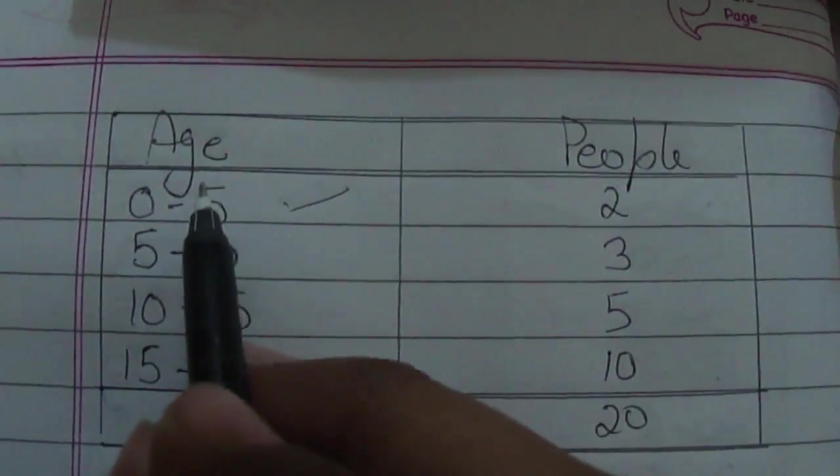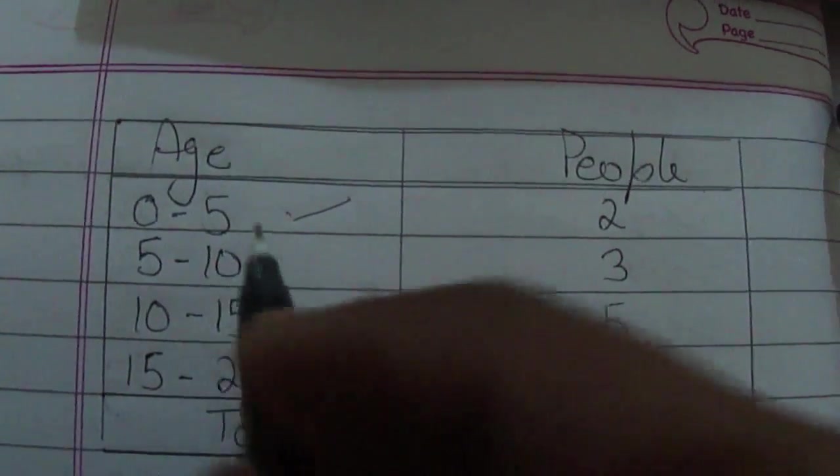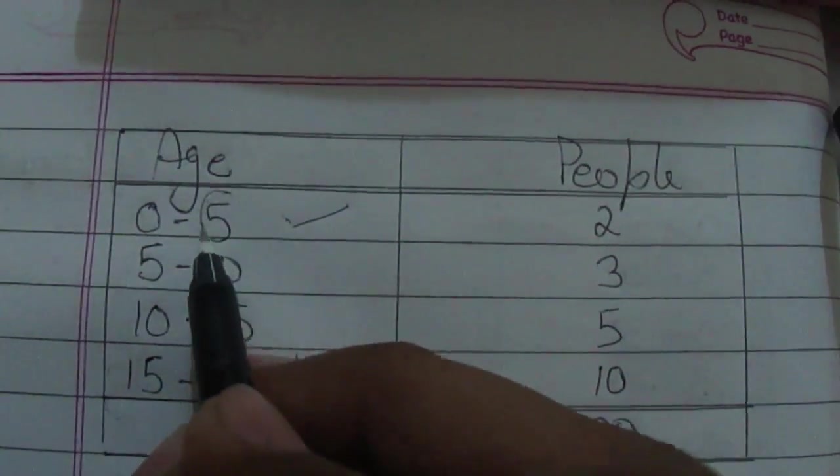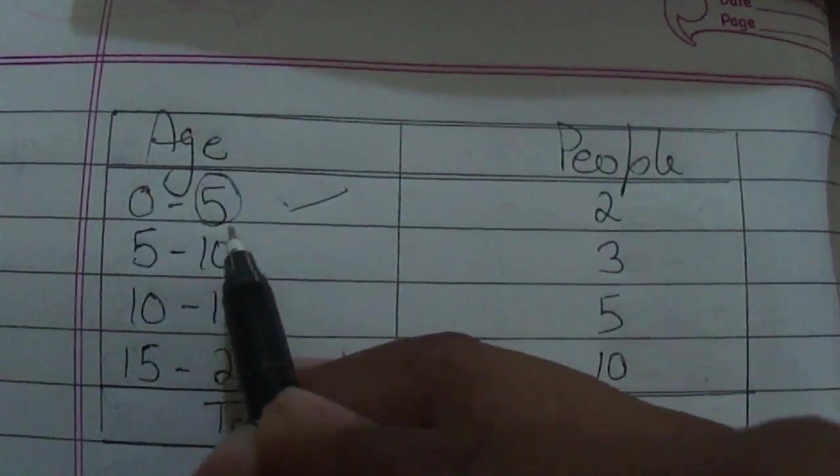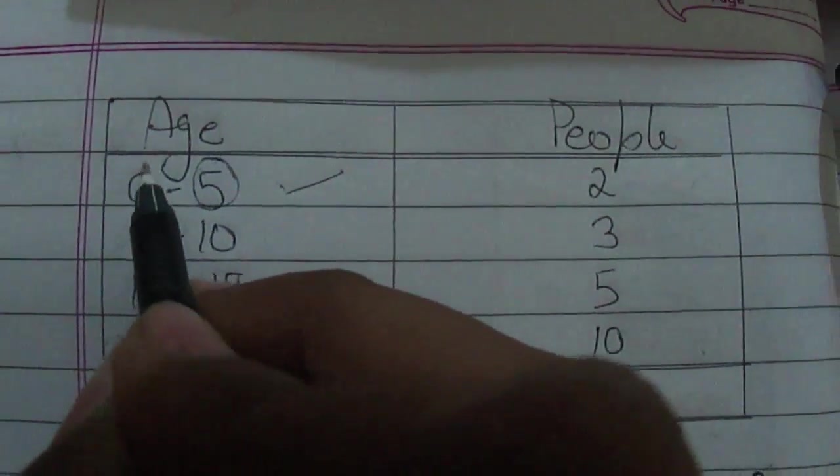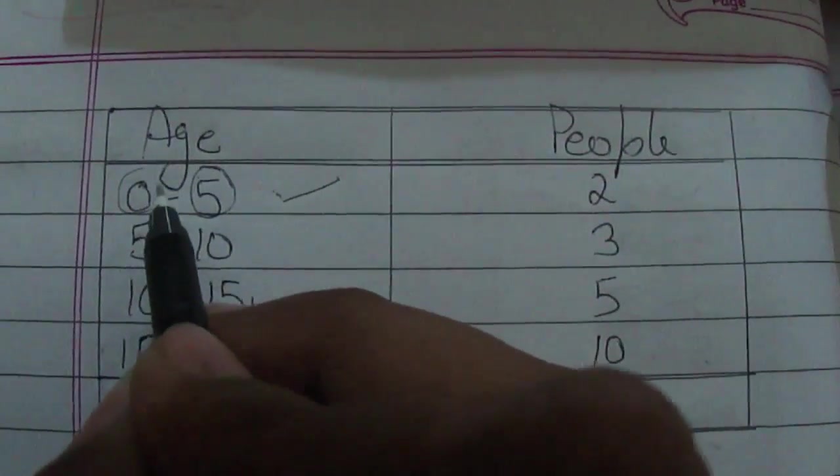The upper limit of a class is the highest value. Hence, 5 would be its upper limit. Similarly, the lower limit is the lowest value of that class. Hence, 0 would be its lower limit.